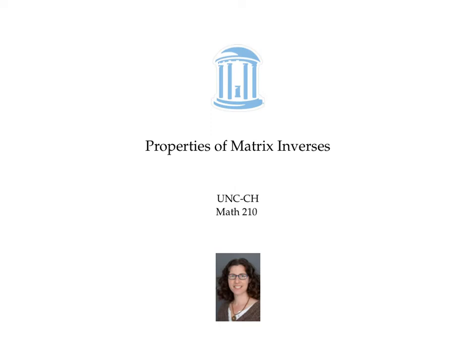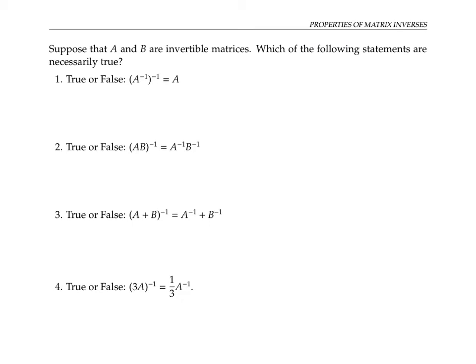This video gives some properties of matrix inverses. Suppose that A and B are invertible matrices. I've written down four different properties here, and for each of these properties, see if you can figure out if it's necessarily true, no matter what invertible matrices A and B are. You may want to try some examples, like picking a couple of simple two-by-two invertible matrices and testing these out.